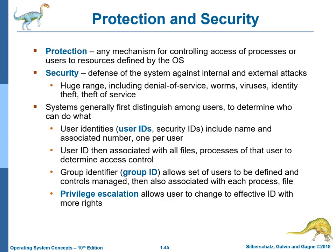Protection and security: protection is any mechanism for controlling access of processes or users to resources defined by the operating system. Security is the defense of the system against internal and external attacks, including denial of service, worms, viruses, identity theft, and theft of service. Systems generally distinguish among users to determine who can do what. User identities include a user ID — a name and associated number, one per user — associated with all files and processes of that user to determine access control. A group identifier allows a set of users to be defined with managed controls. Privilege escalation allows a user to change to an effective ID with more rights.